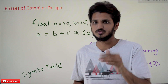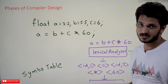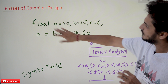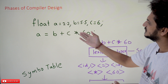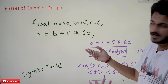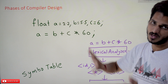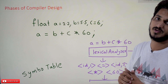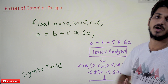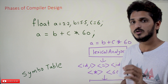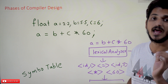You should have that intuition. Now, for the phases of the compiler, let's take an example: float a = 2.2, b = 5.5, c = 6, and sum a = b + c * 60. This is the expression given. If you want to convert this high-level language into low-level machine language, it will go through different phases in the compiler. We are going to understand those phases step by step. The first phase is the lexical analysis phase.